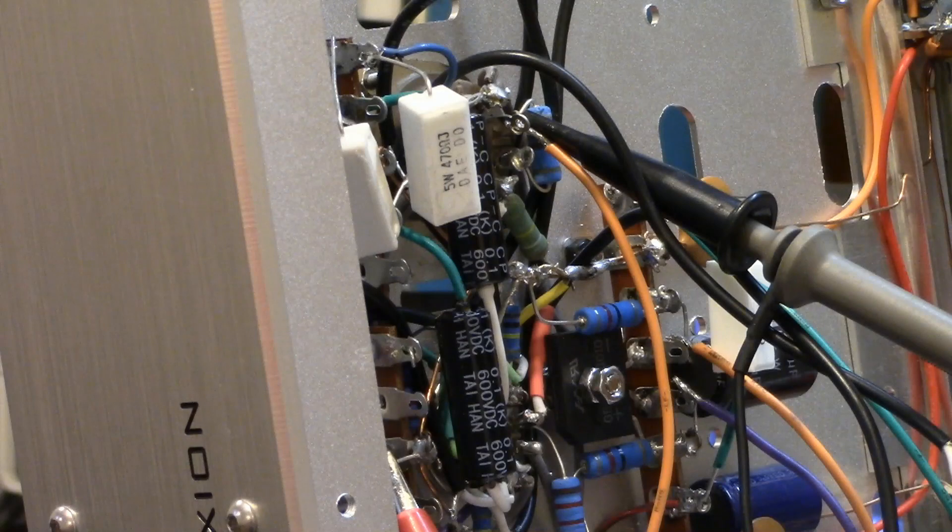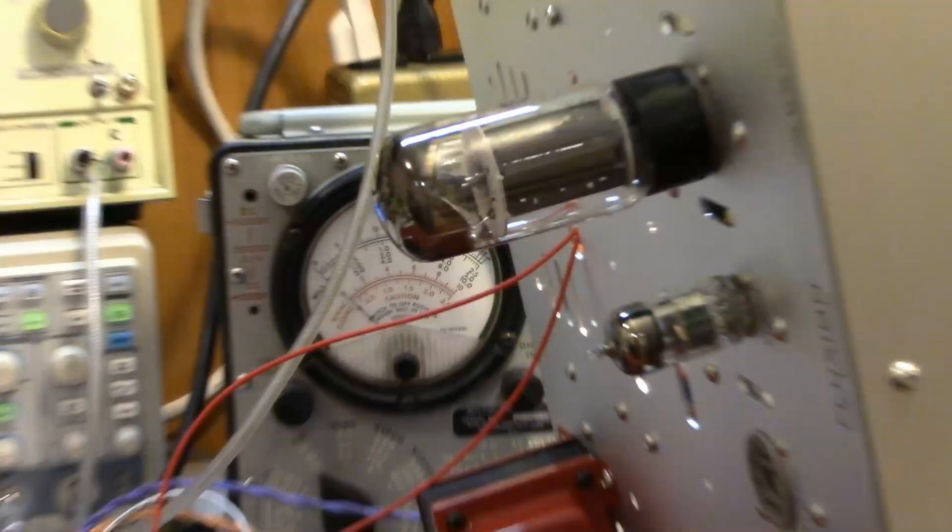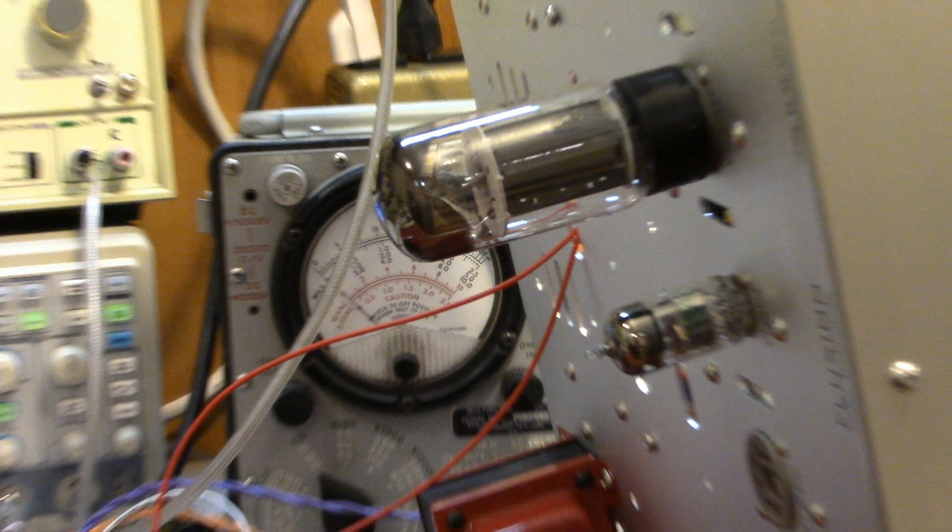Then it is applied to the 6L6 driver grid. 6L6 amplifies the signal enough to transfer it to the grid of 805 via the interstage transformer. As you can see, filament and high voltage is not yet applied to output tube 805.